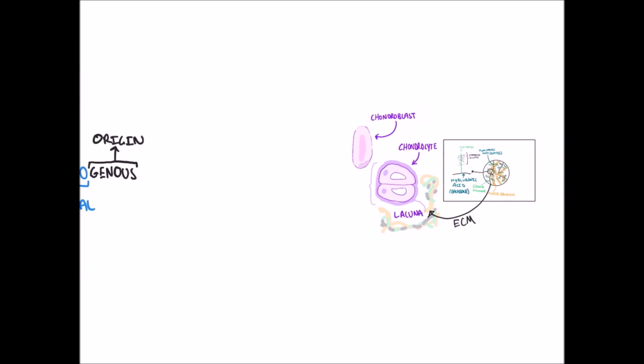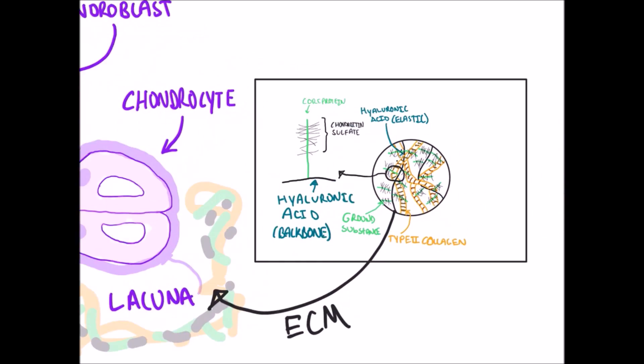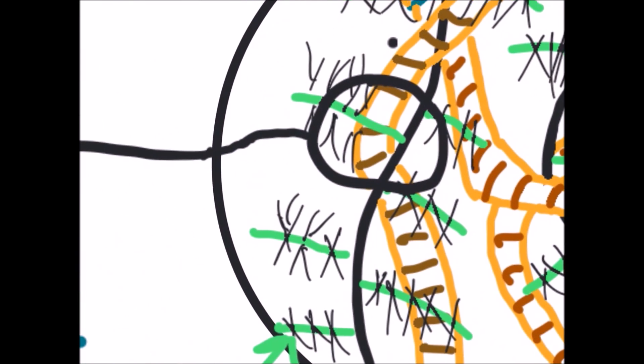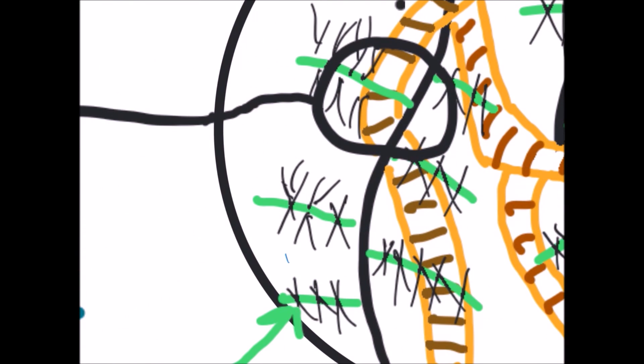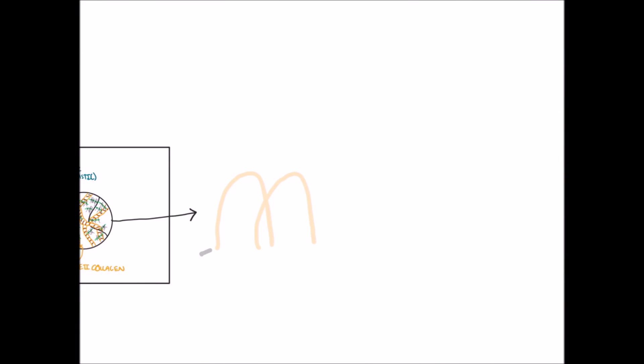They are isogenous. Not only does the extracellular matrix that these chondroblasts produce contain the glycosaminoglycans, hyaluronic acid, and chondroitin sulfate, or the collagen fibers, it also contains a lot of water because of the negatively charged glycosaminoglycans which attract water.